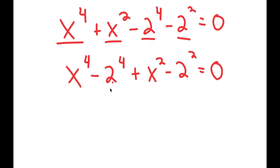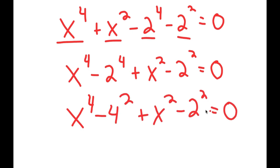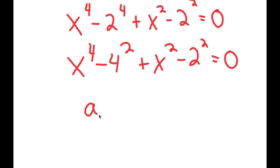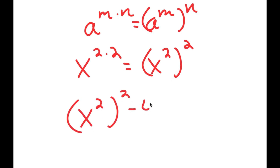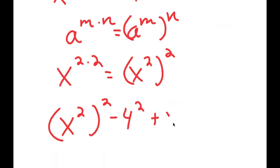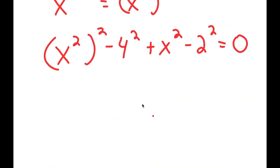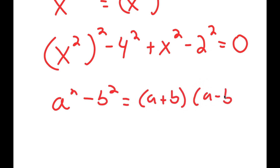Now, 2^4 is 16, which equals 4 squared. So I have x^4 minus 4^2, plus x^2 minus 2^2. Using the property a^(mn) = (a^m)^n, x^4 equals (x^2)^2. So I get (x^2)^2 minus 4^2 plus x^2 minus 2^2 equals 0. Everything is now in the form of a square, so I can apply the difference of squares identity a^2 minus b^2 equals (a+b)(a-b).